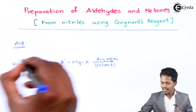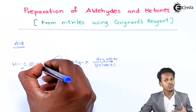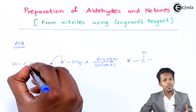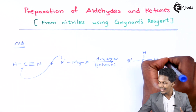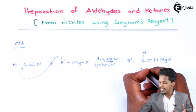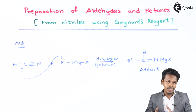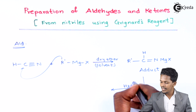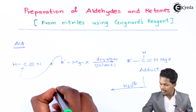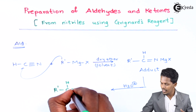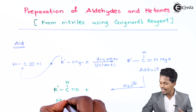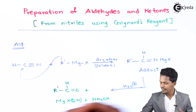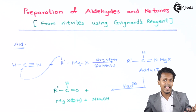In the adduct, the R⁻ group attaches to the carbon atom while the MgX attaches to the nitrogen atom. So we get R–C(H)=N–MgX as the intermediate complex. The reaction doesn't stop here because this is not the main product. The reaction then proceeds with acid hydrolysis, giving us R–CH=O (an aldehyde) as the main product, with byproducts MgX(OH) and NH₄OH.